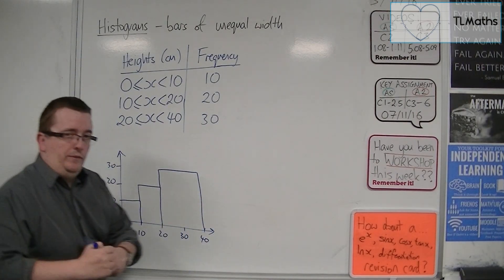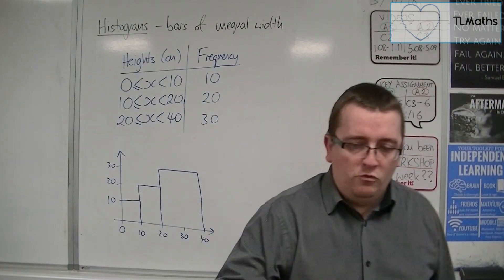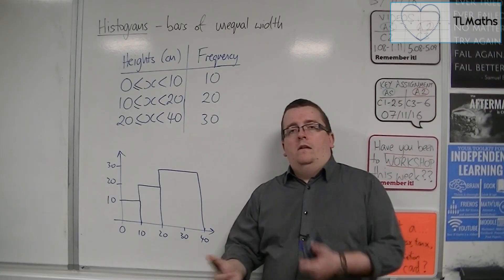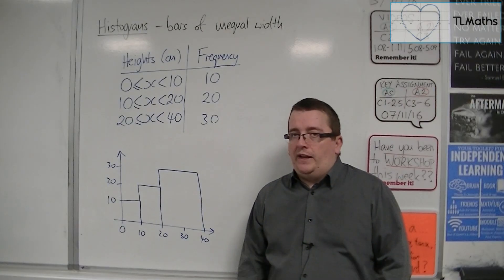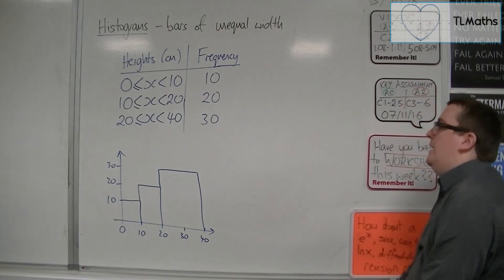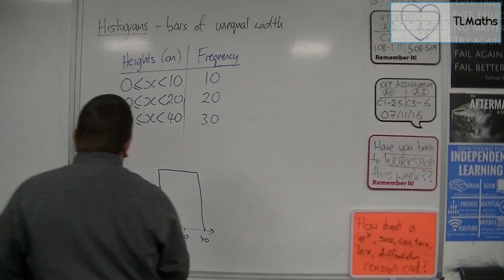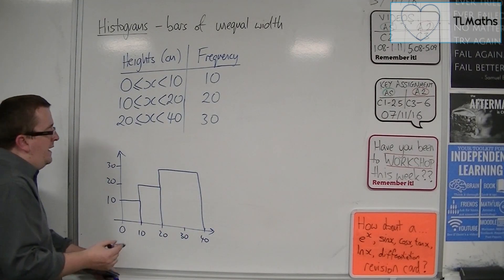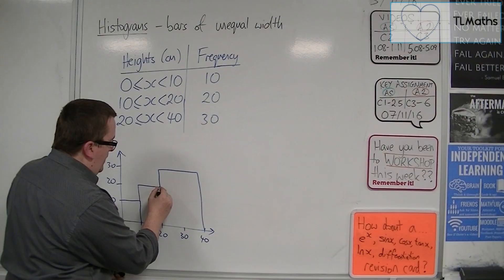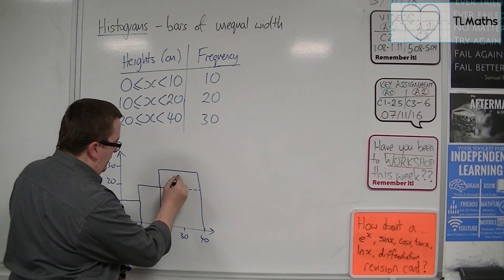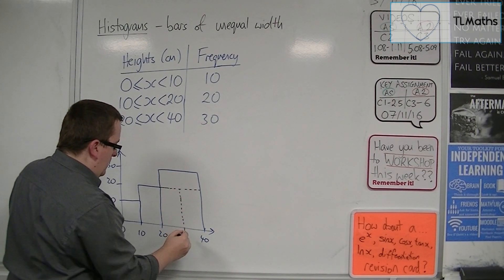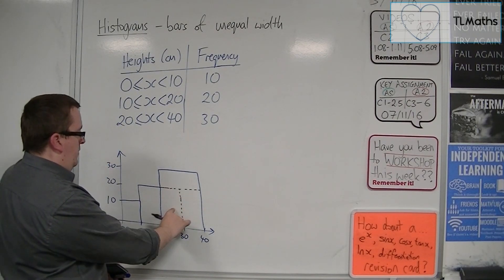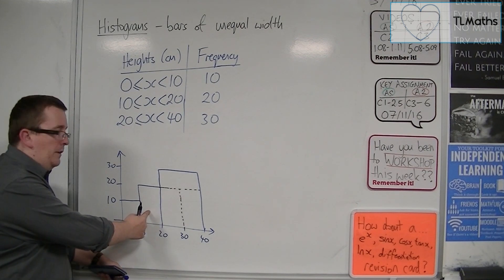Now the problem is, the real problem here is that this would not be a good way of representing this data because it doesn't look right. The reason why it doesn't look right is because this big block that I have here is actually three times the size of that one. So if this is three times the size, then surely this is worth three times as many as that one.